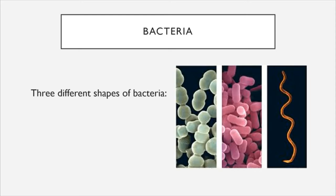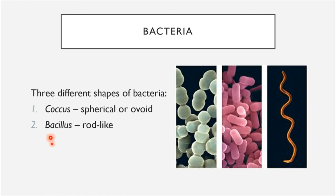There are three different shapes that bacteria are generally found in, and these shapes are important as the first step for identifying an unknown bacterium. The first shape is coccus — these cells are spherical or ovoid in shape; the plural is cocci. The second shape is bacillus, plural bacilli — these are rod-like in shape. The third shape is spiral — these have a corkscrew-like shape.